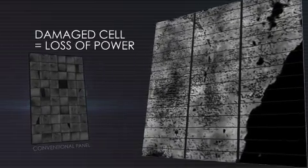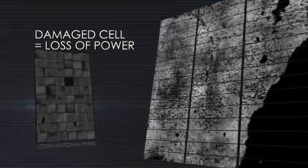What's the problem with cracked cells? In conventional panels, damaged cells essentially stop working, reducing the panel's power output. They can also cause the panel to heat up and accelerate aging.